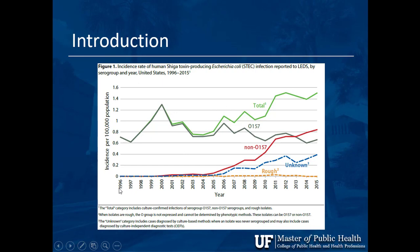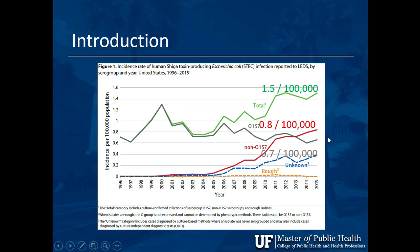Here's the same information in a line graph, with the x-axis running from 1996 to 2015 and the y-axis showing incidence per 100,000 population. The overall rate was 1.5 per 100,000 in 2015, with O157 at about 0.7 and non-O157s at about 0.8. The question remains: is there really more of this E. coli, or are our laboratory methods improving and detecting more of the non-O157s?